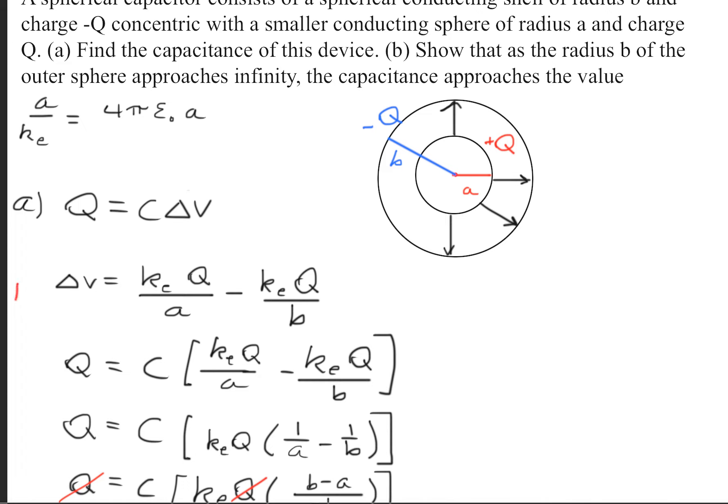We'll take the limit as b approaches infinity, and what that does is it gets rid of this term right here. So our new ΔV value is simply k_e·Q/a.